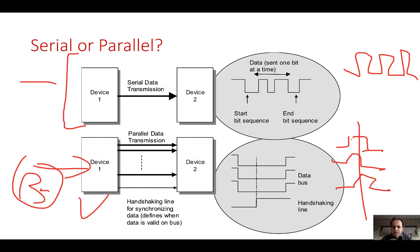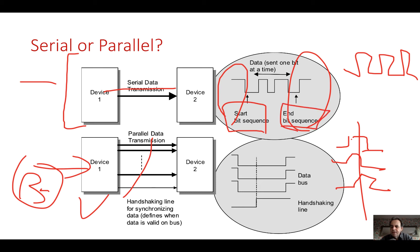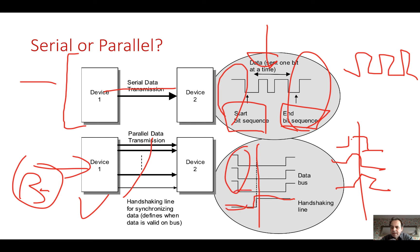Parallel will be faster because we can send more bits at any given time. With serial communications we need some way to identify the start and end of our data, so we send a start bit or start sequence, an end sequence, and put the data in between. With buses we typically have a handshaking line such as a clock — when the clock transitions from one state to the next, the data is read or put onto the bus. It's important that our machines keep synchronized with the data.